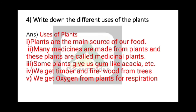Question No. 4: Write down the different uses of plants. The first use is — plants are the main source of our food. Plants are used for food, such as spinach.